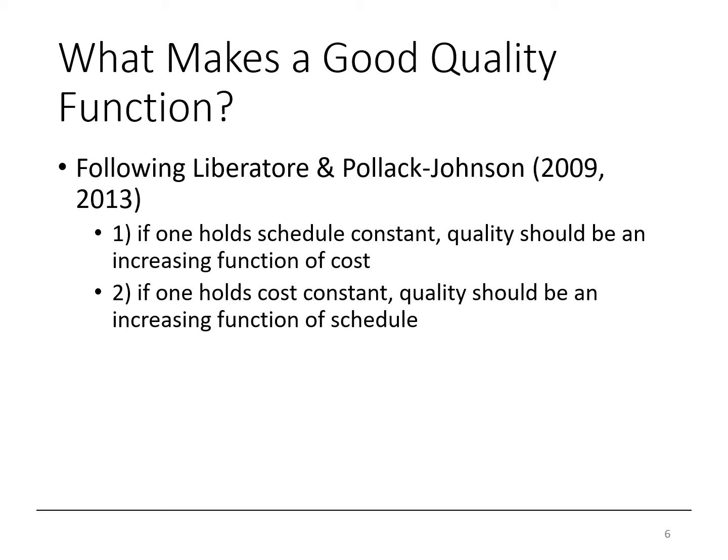So if we're to define a quality function, there must be some criteria to define what makes a good quality function versus a bad one. Liberatore and Pollack-Johnson defined two criteria that make up a good quality function. One, if one holds schedule constant, then quality should be an increasing function of cost. And two, if one holds cost constant, then quality should be an increasing function of schedule. In other words, as we spend more time and money on an activity, quality should increase.